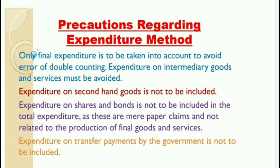Expenditure on transfer payments by the government is not to be included. In the expenditure, we discussed government final expenditure — that means expenditure on final goods made by government. Here, government expenditure like payment of pension, payment of unemployment allowances, etc. — these are transfer payments and we will not consider these in the calculation of national income. These are the precautions regarding the expenditure method.